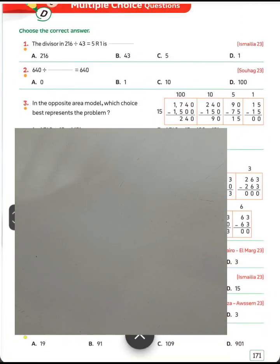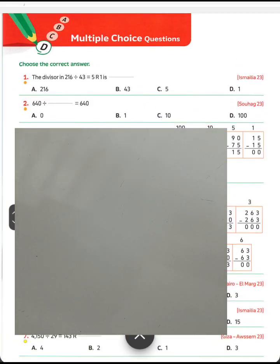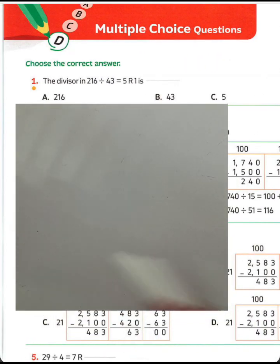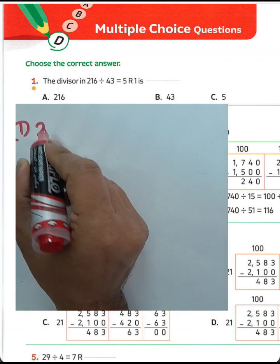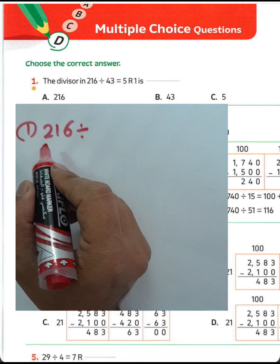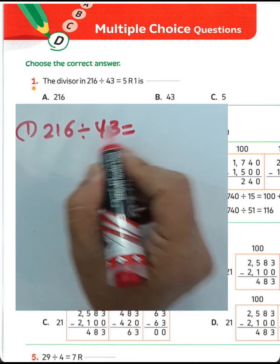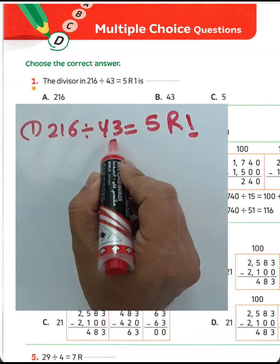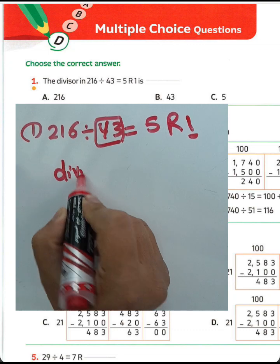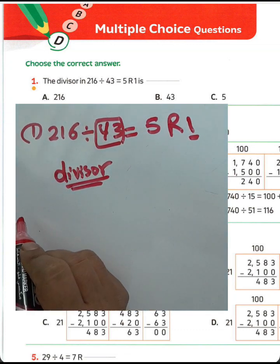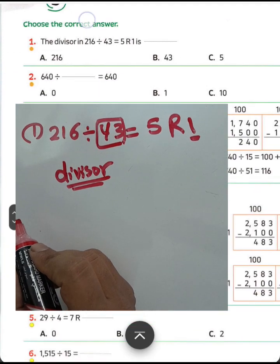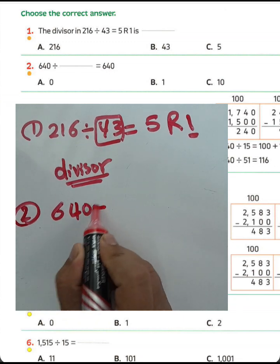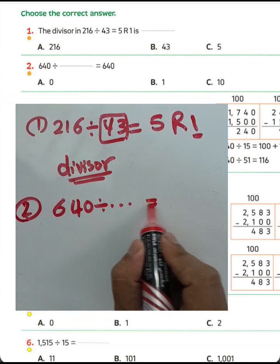Cognitive assessment page 171, multiple choice questions from the master book. Question number one: 216 divided by 43 equals 5 and remainder 1. He asked about what the divisor is here — the divisor is 43. Letter B.